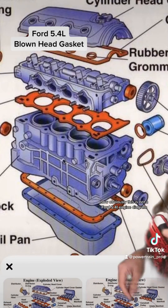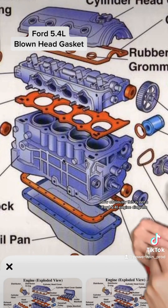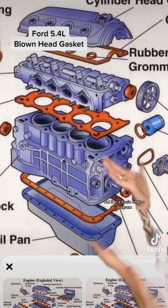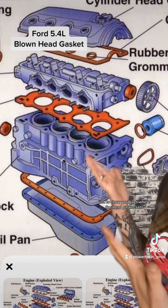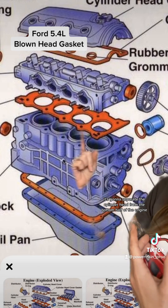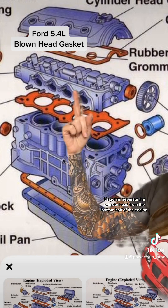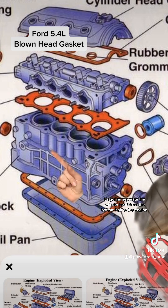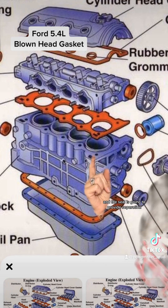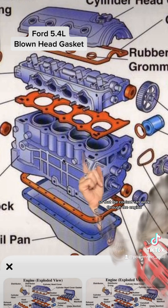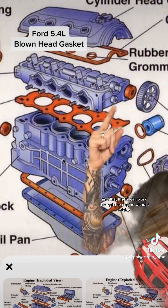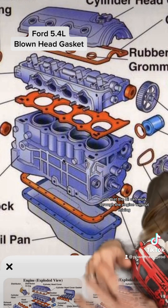This is not a Ford 5.4 liter engine diagram, but it is a basic engine diagram just to show where the head gasket sits. It's going to separate the cylinder head from the bottom half of the engine, and the seal provides separation so that coolant and oil can work through the engine without mixing.